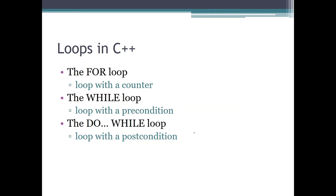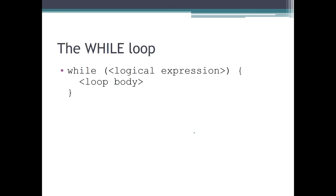As a reminder from the previous lecture, the for loop was the loop with the counter. Now we will talk about the while loop, which is also called the loop with a precondition, because the loop starts with the condition. The while loop in C++ is a very simple command. After the keyword 'while', in brackets we only specify one thing — a single logical expression — unlike the for loop which had three components in the brackets.